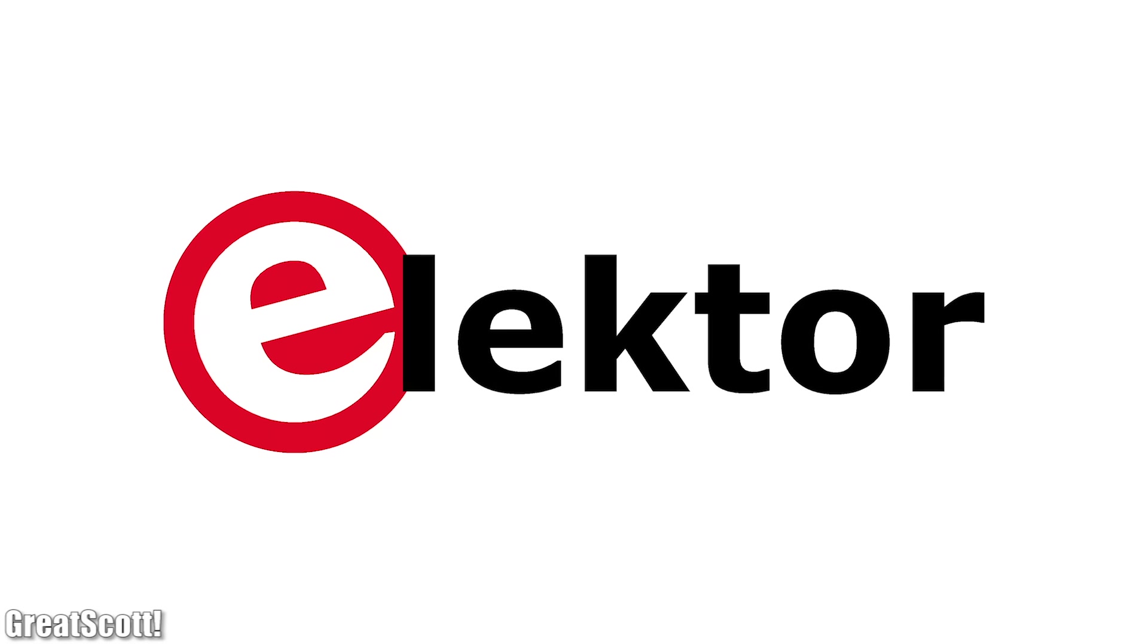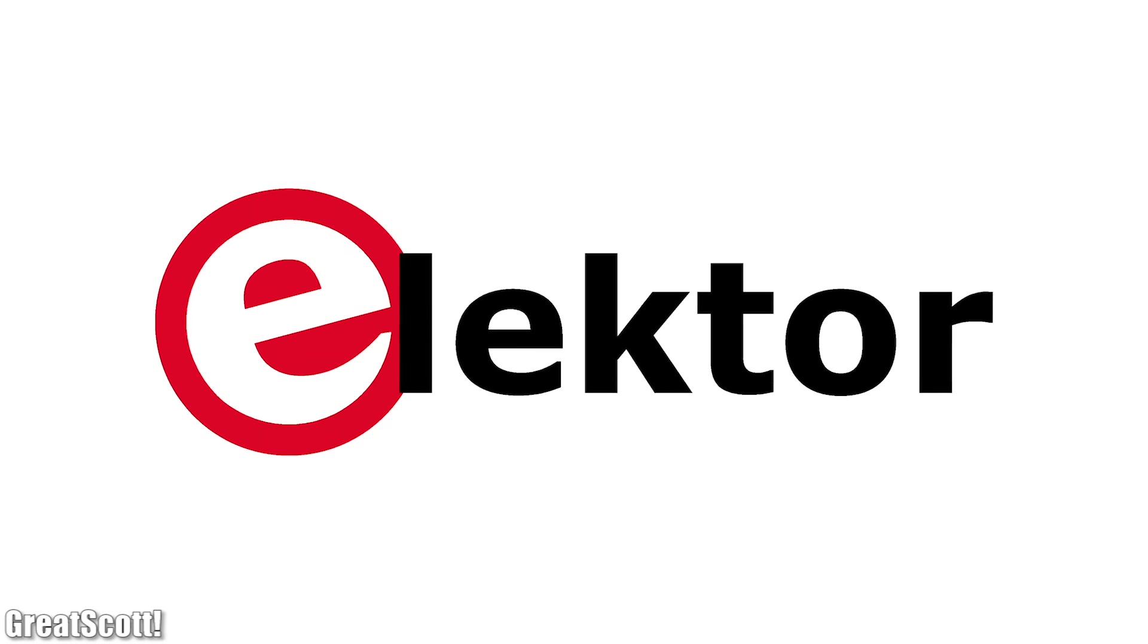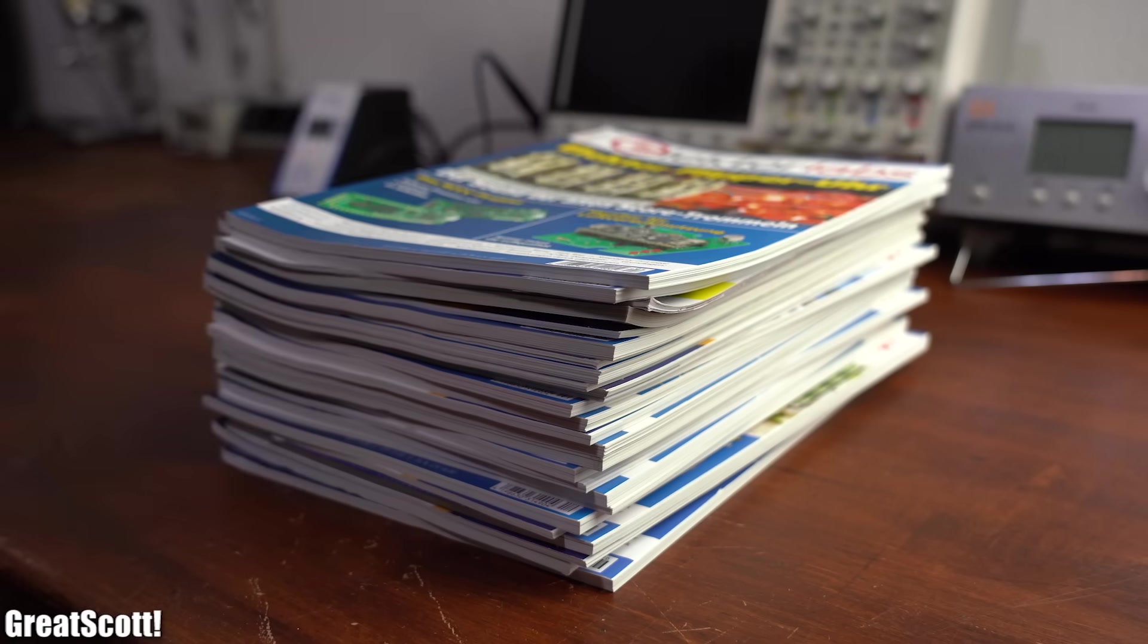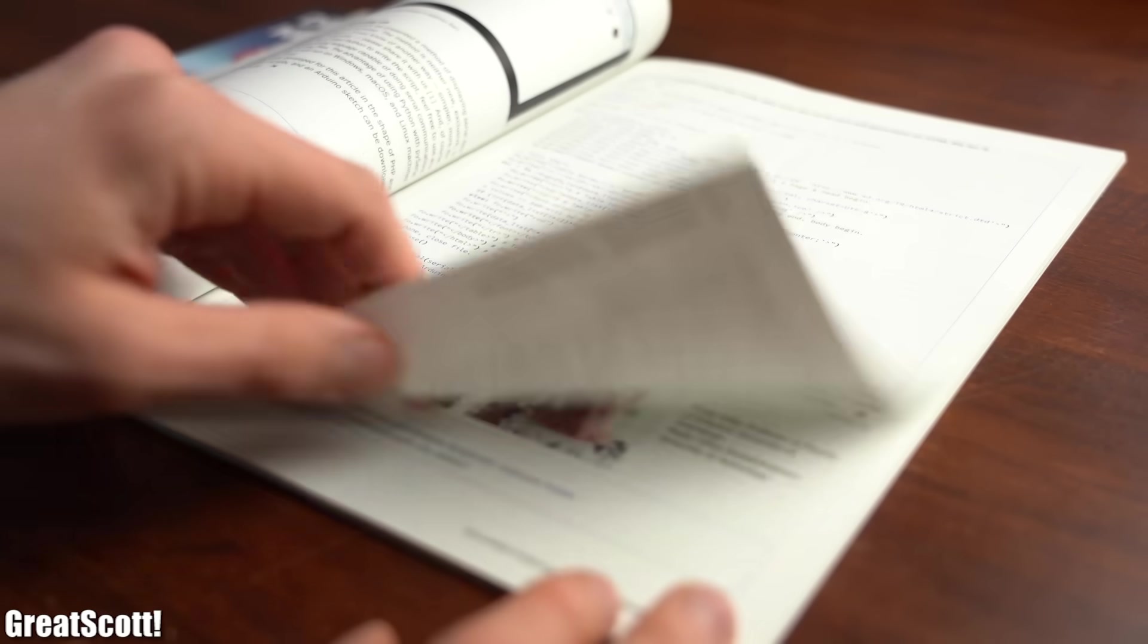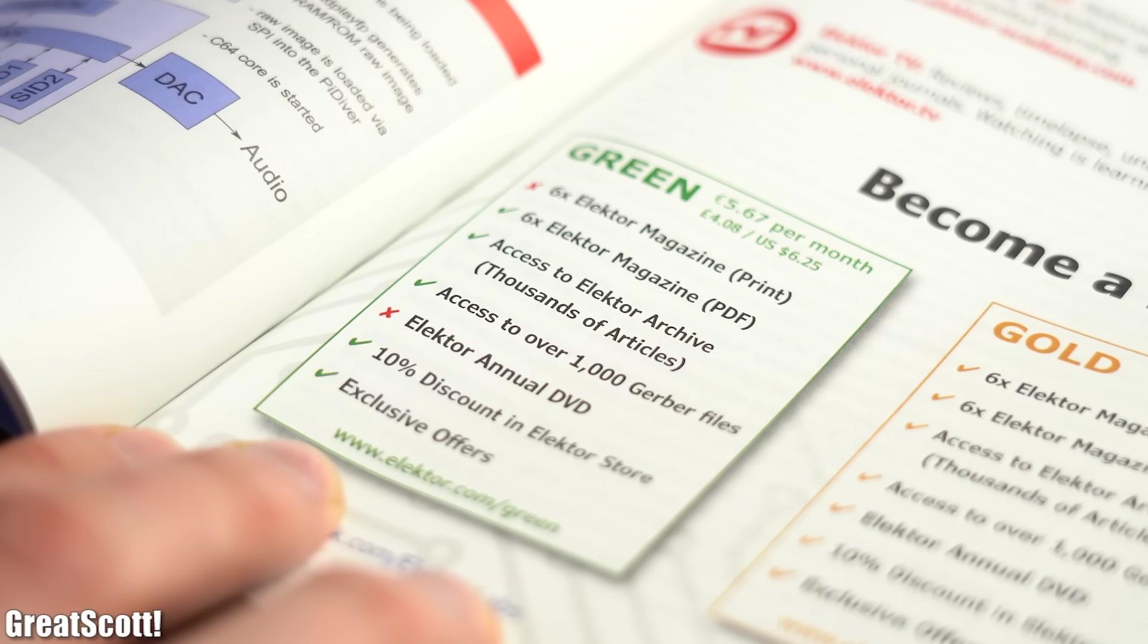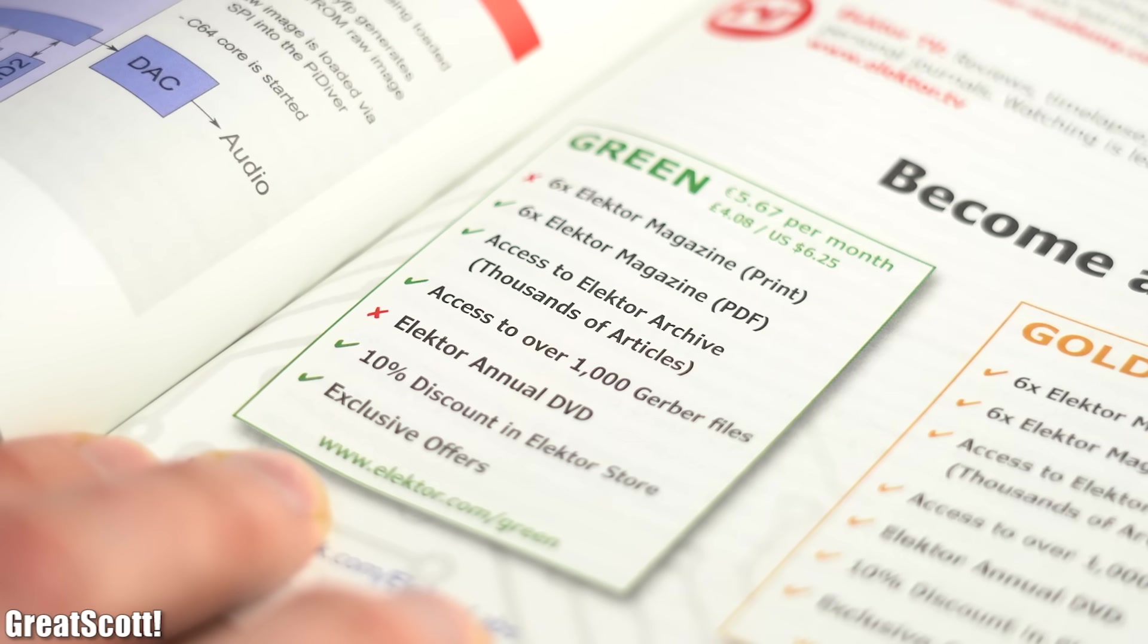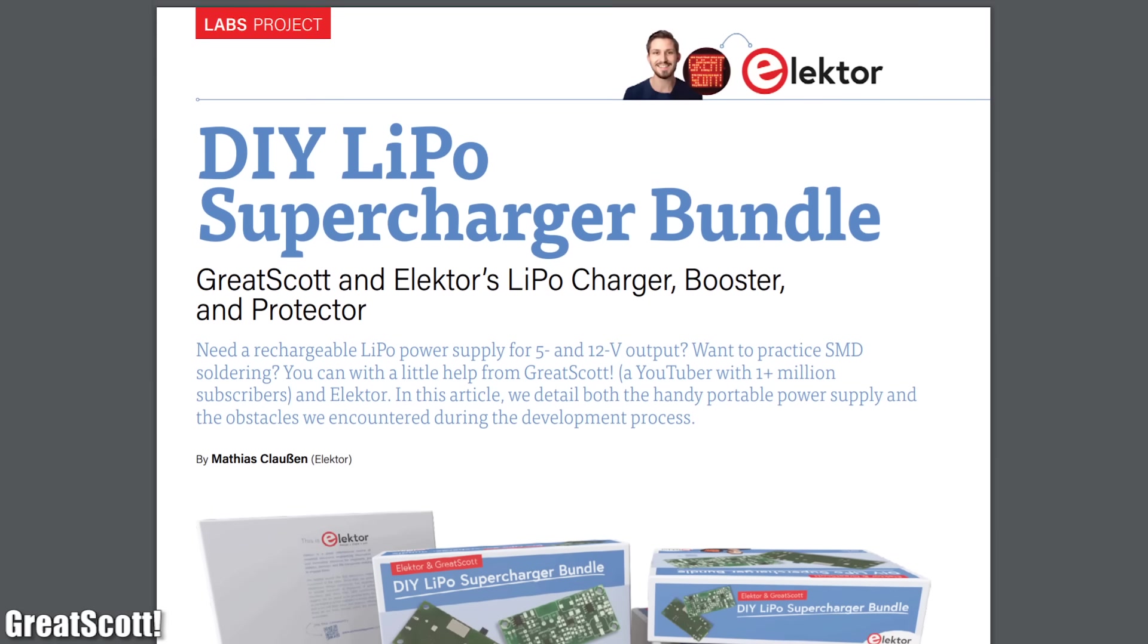This video is sponsored by Electro who lent me the PCB printer showcased in this video to test it out. Since Electro knows that this product is not affordable for everyone, they kindly offer a 60% discount on an Electro Green membership for one year. With it you get access to more than 1000 electronics DIY projects and the newest Electro magazine in digital form every two months. I highly recommend reading them and I even made an appearance in them.